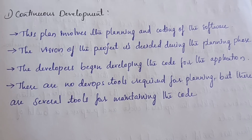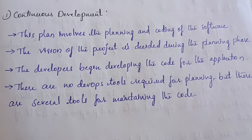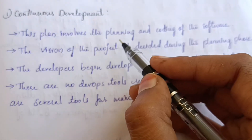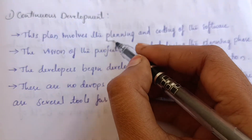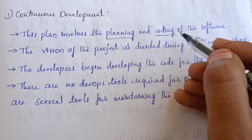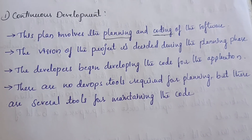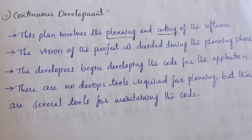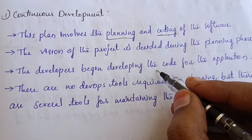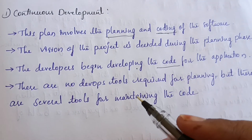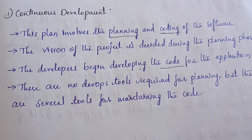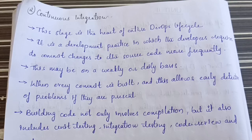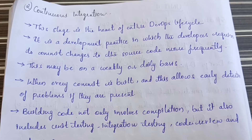First, let us discuss continuous development. Continuous development involves planning and coding of the software. The vision of the project is decided during the planning phase, and developers begin writing the code for the application. There are no DevOps tools required in this phase, but to maintain this code some tools are required.